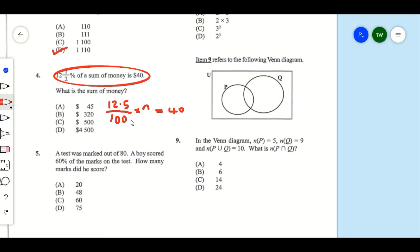We can solve this algebraically by multiplying both sides by the inverse of 12.5/100, which is 100/12.5. Therefore, n equals 40 times 100 over 12.5. And 40 × 100 ÷ 12.5 gives us 320. So therefore n equals $320, and our answer is B.